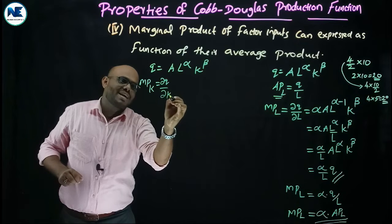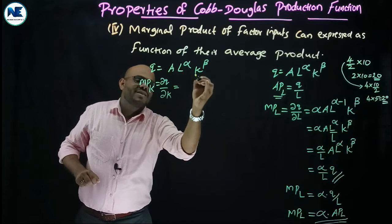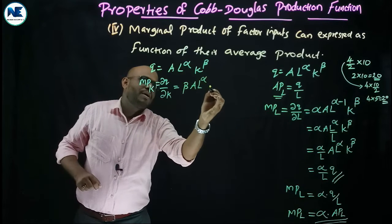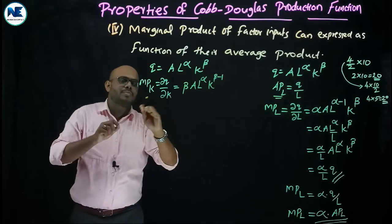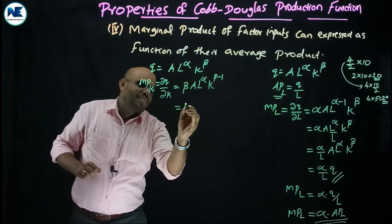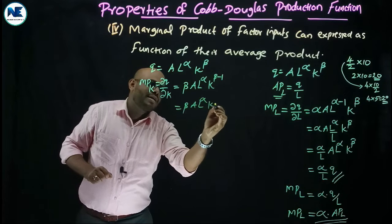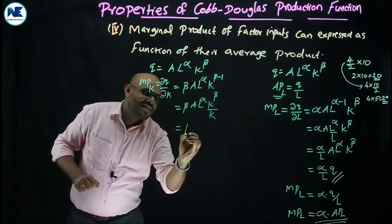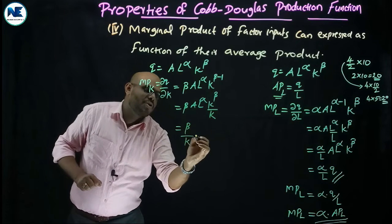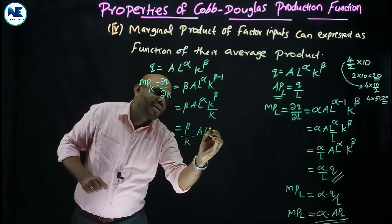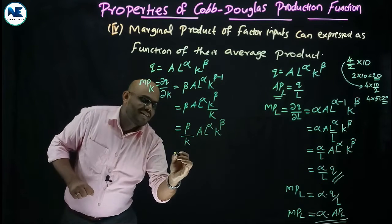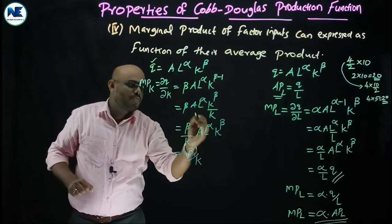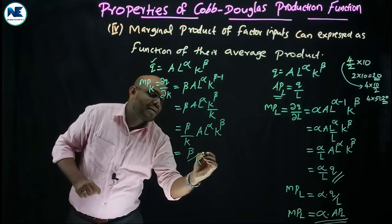Taking the partial derivative ∂Q/∂K = beta · A · L^α · K^(β−1). We can rearrange this as beta/K · A · L^α · K^β. Since A · L^α · K^β equals our output Q, this becomes beta/K · Q, or equivalently beta · Q/K.